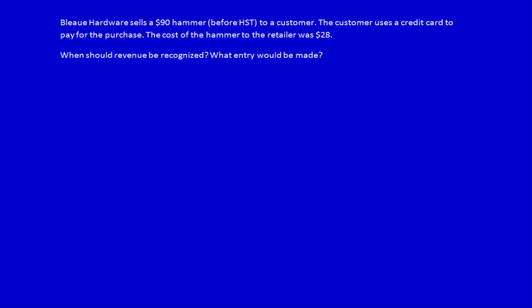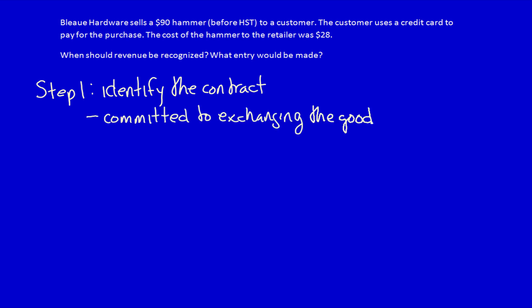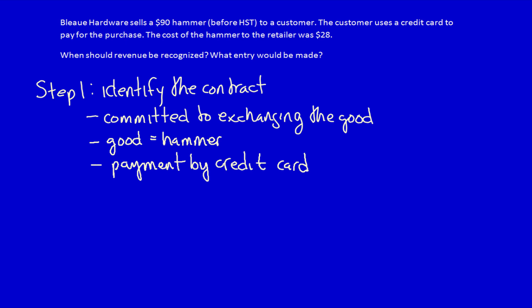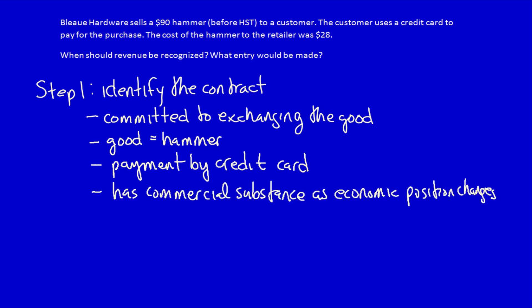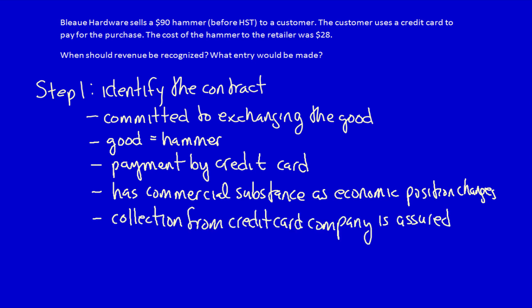Step one: identify the contract. It's clear that Blue Hardware and the customer are committed to exchanging the hammer. The good can be identified — it's a hammer. The payment terms have been identified. The contract has commercial substance because both parties will be in a different economic position afterwards: Blue will have money instead of a hammer, and the customer will have a hammer instead of money. Finally, collection is 100% probable because they'll collect from the credit card company, and you can assume credit card companies always pay. Step one has been met.